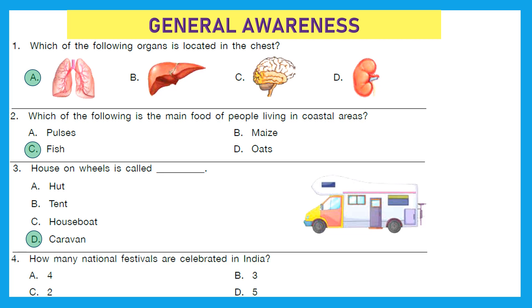Question 4: How many national festivals are celebrated in India? The right answer is option B — three. Those are Republic Day on 26 January, Independence Day on 15th August, and Gandhi Jayanti on 2nd October.